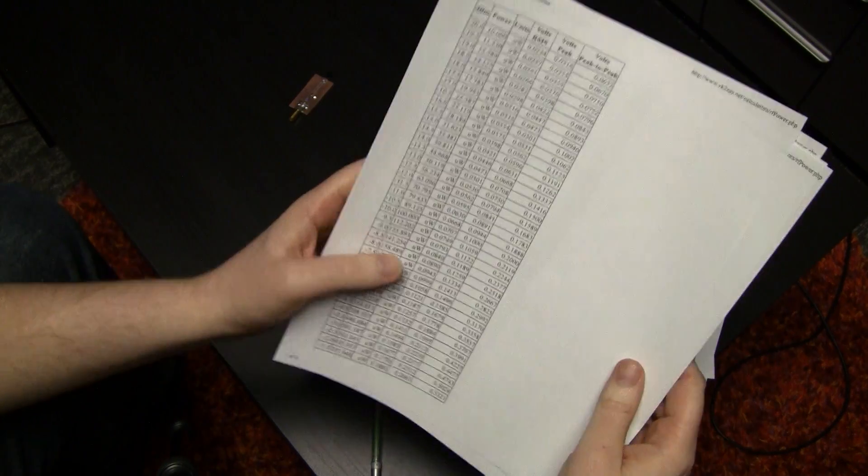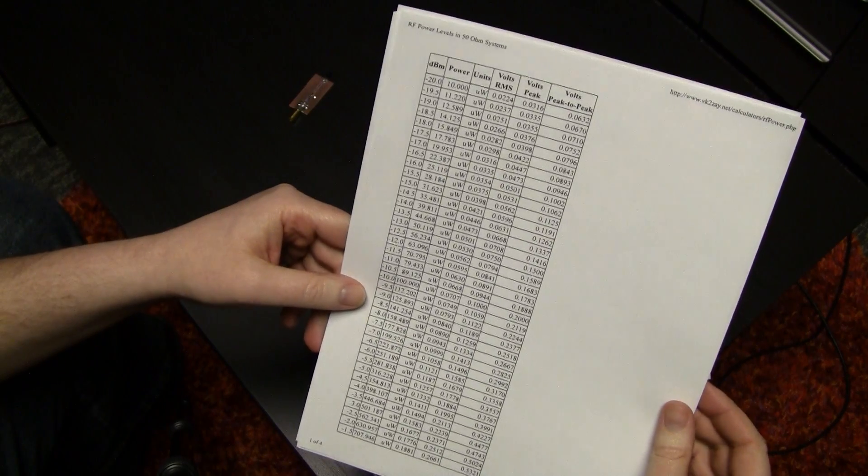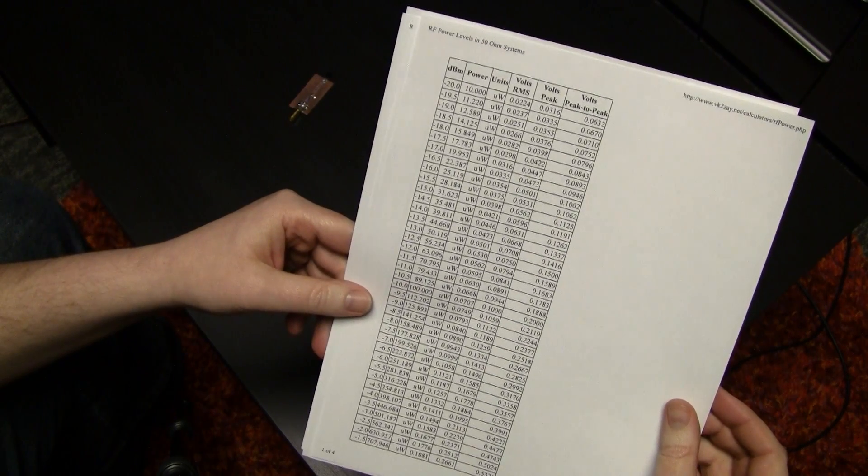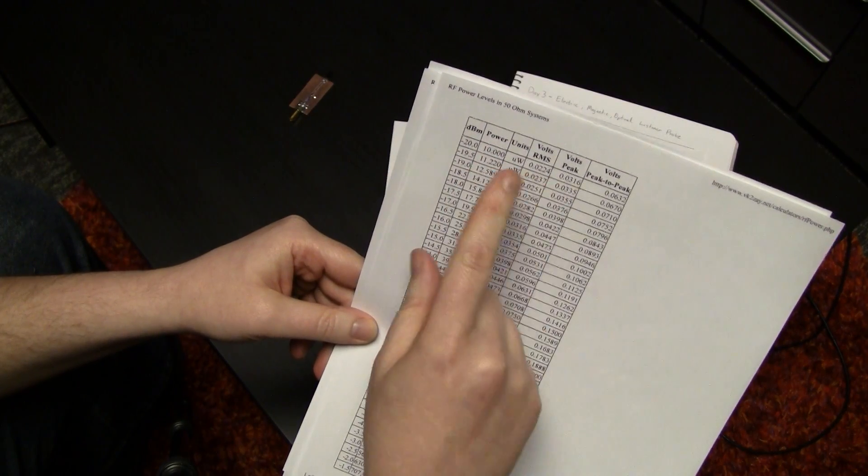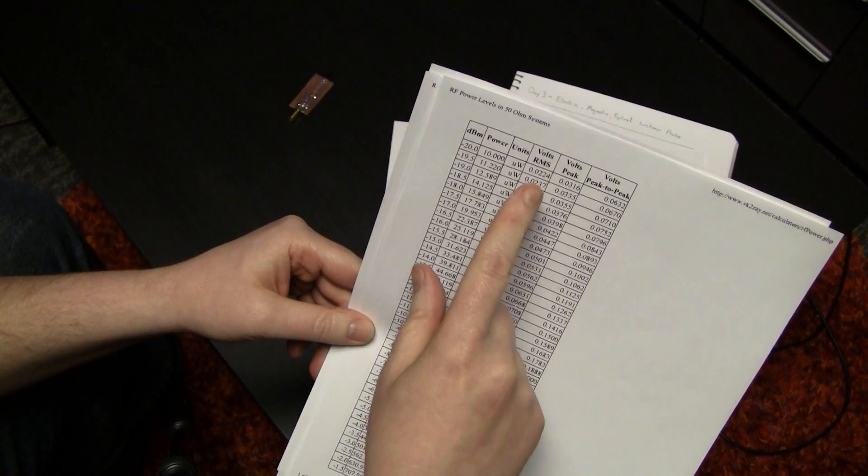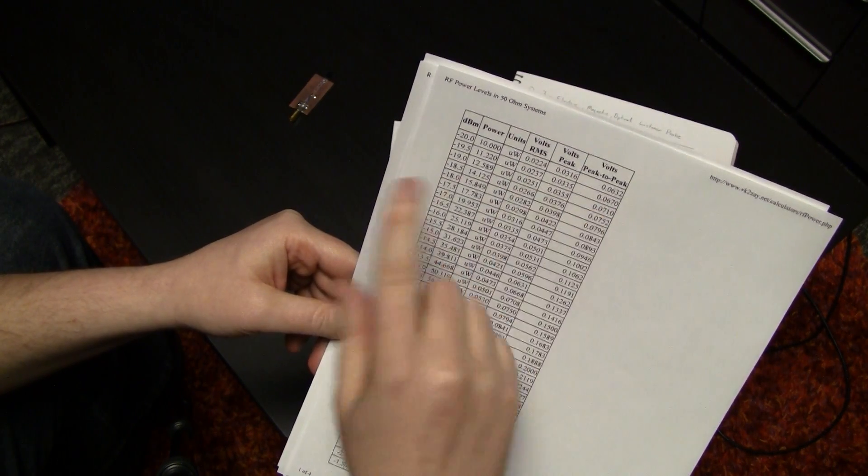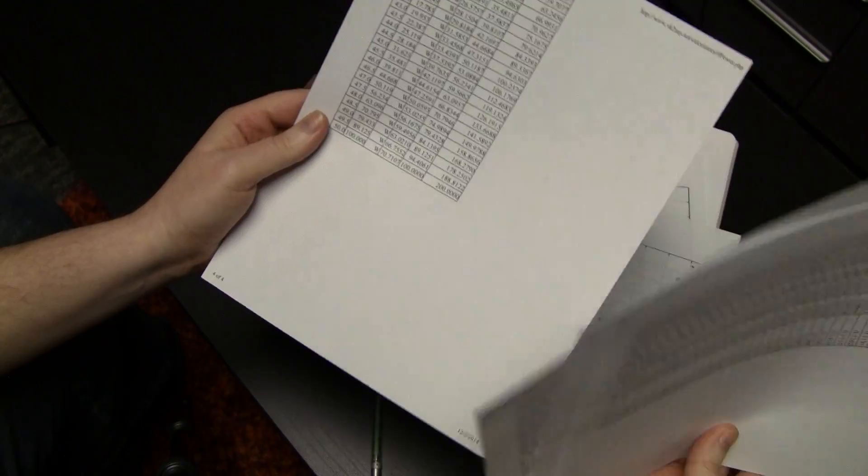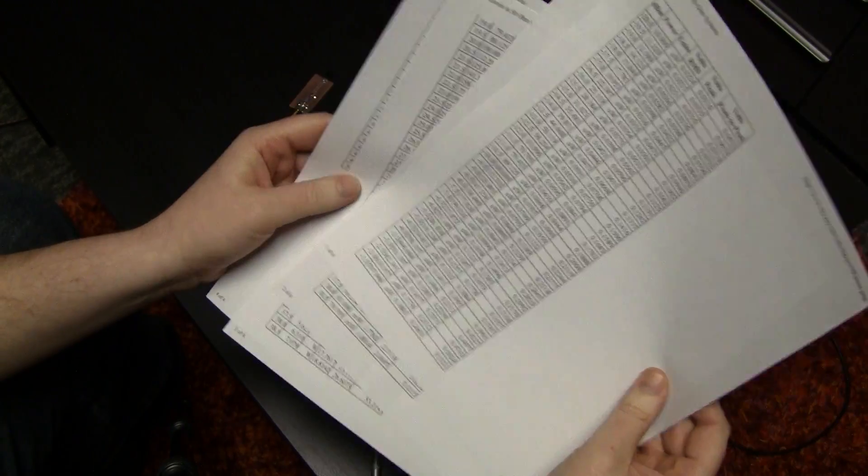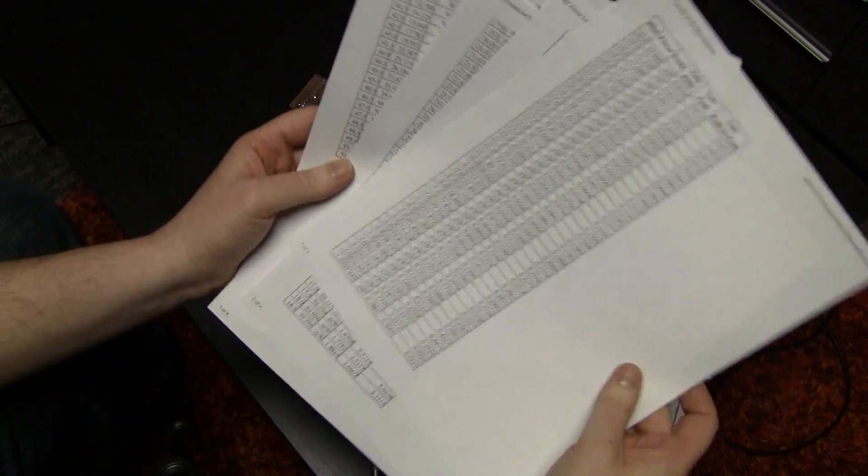On my website, and I'll link this in the description, here's a table, which is kind of handy. I should probably write a calculator one day to do the same thing, but it relates dBm to power in microwatts to watts to voltage RMS and voltage peak and voltage peak-to-peak all for 50 ohm systems. So it's just a long useful table, but it's pretty handy. It hits the important points like the one watt kind of thing and the half watt.